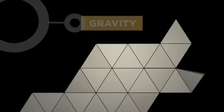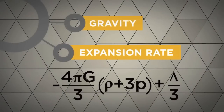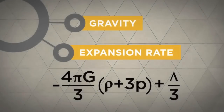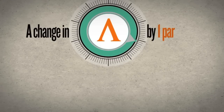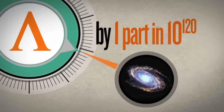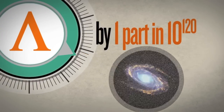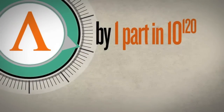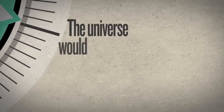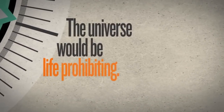No stars, no planets, and no life. Or consider the expansion rate of the universe. This is driven by the cosmological constant. A change in its value by a mere one part in 10 to the 120th parts would cause the universe to expand too rapidly or too slowly. In either case, the universe would again be life prohibiting.